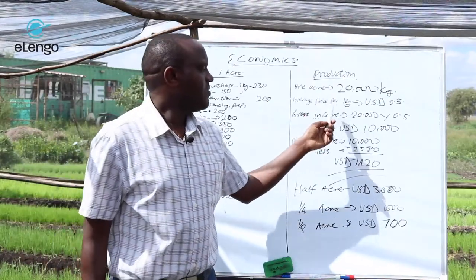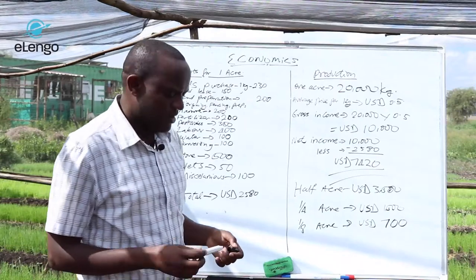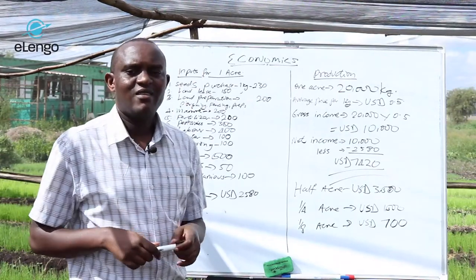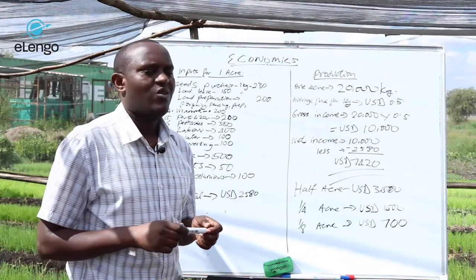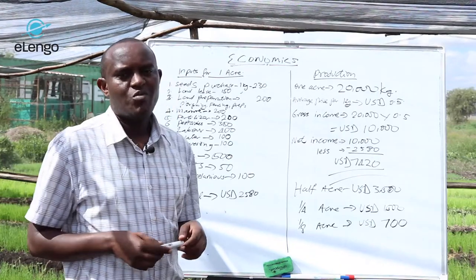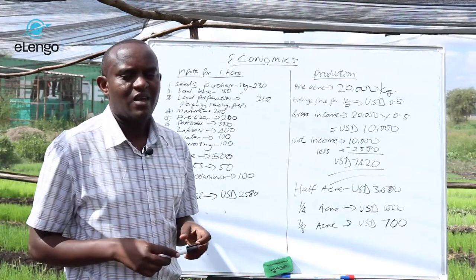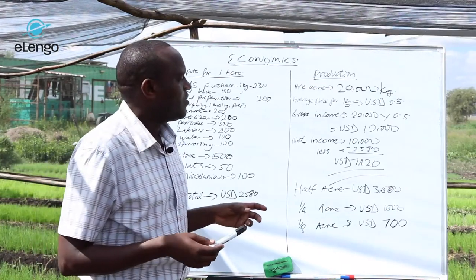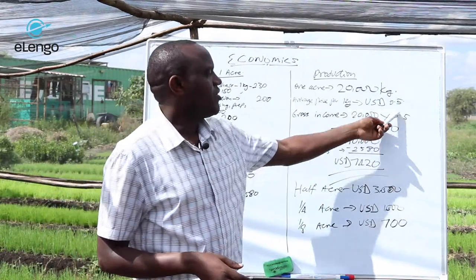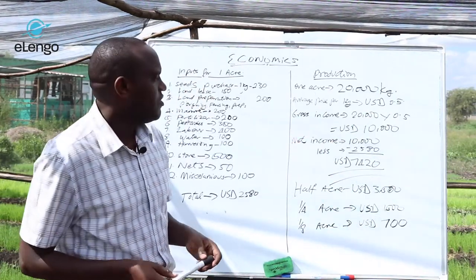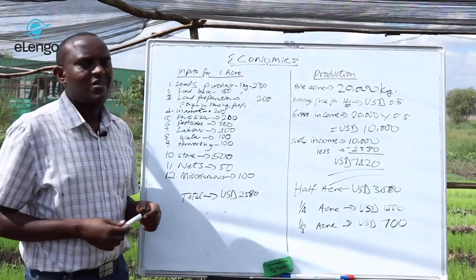The average price is $0.50 US dollars per kg, but sometimes it goes up to $1.00 or even $1.50 US dollars, depending on the market and the supply and demand for onions. We decided to put an average of $0.50 US dollars as the price per kg.